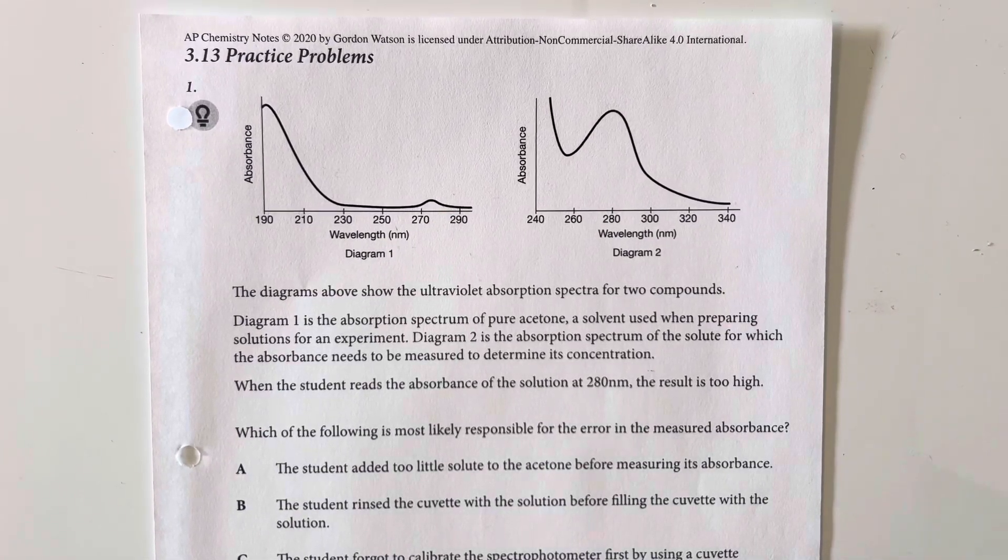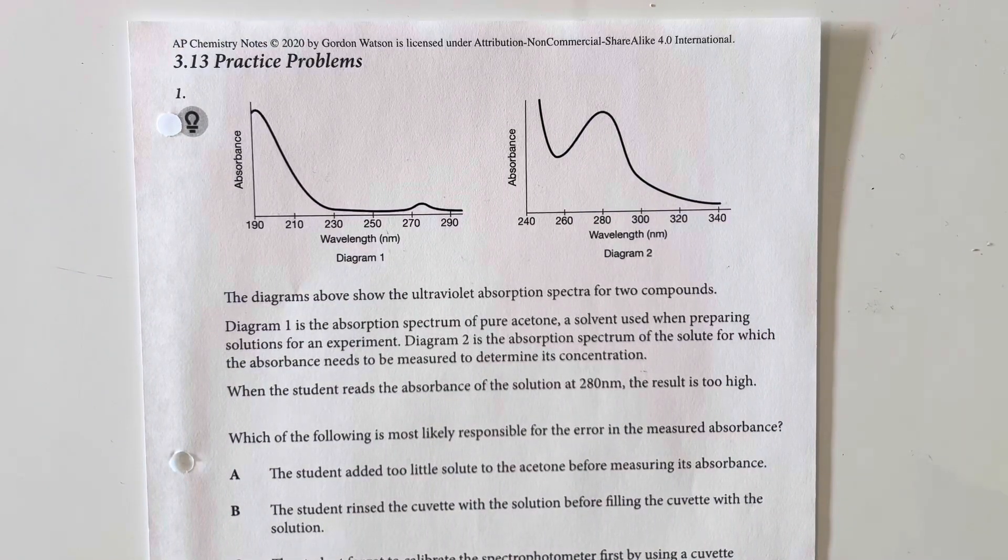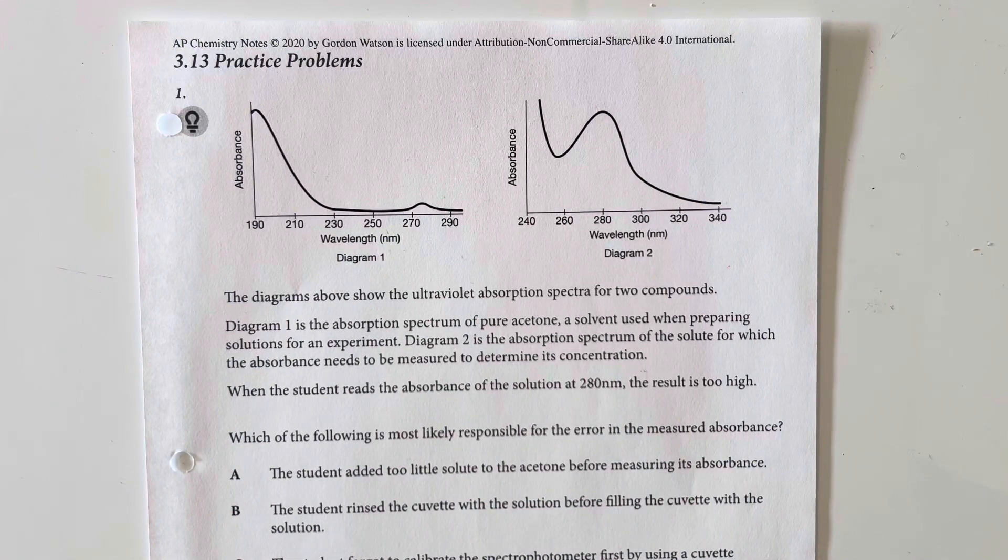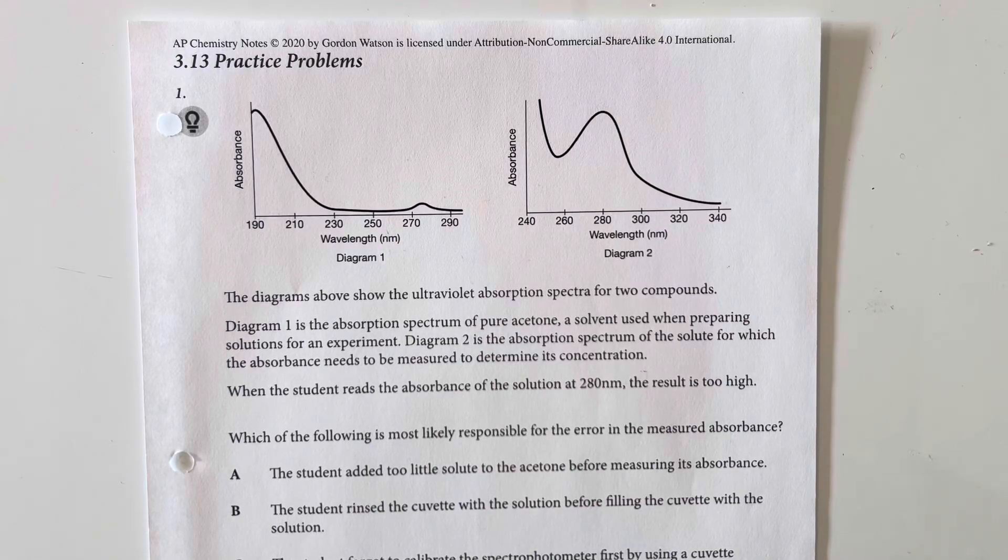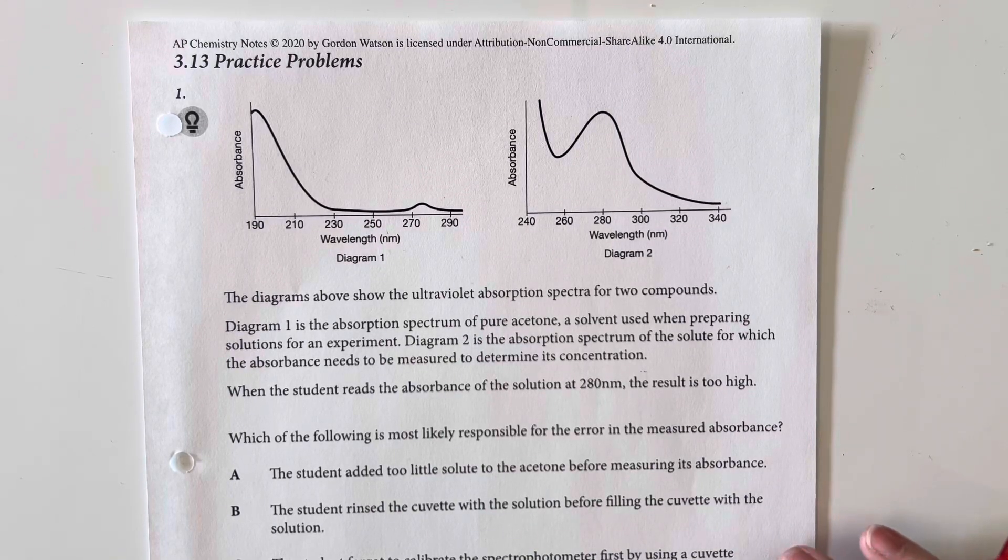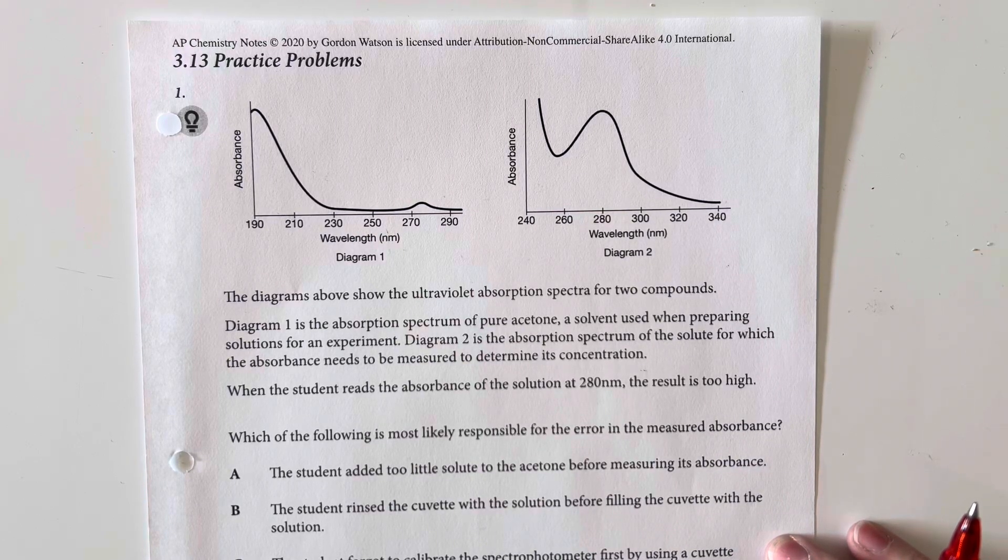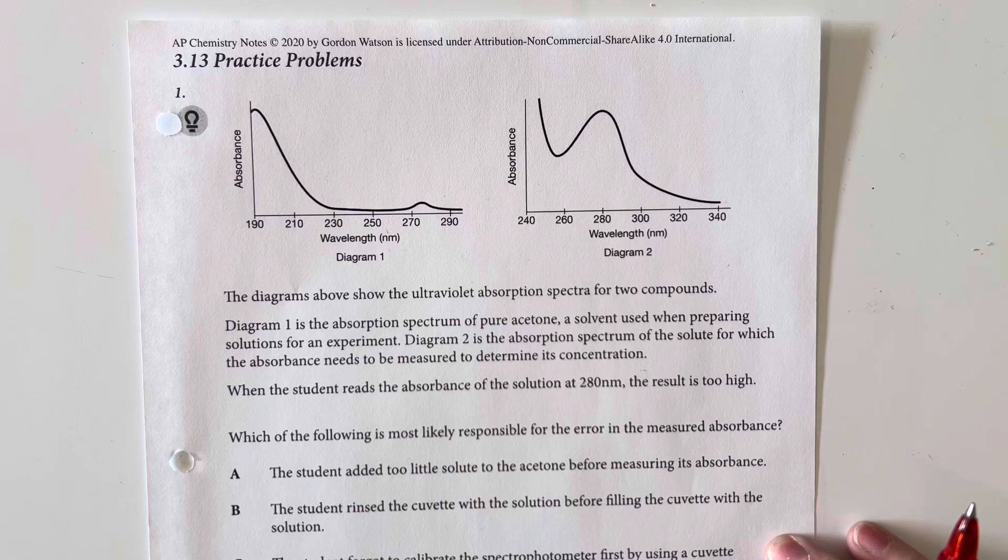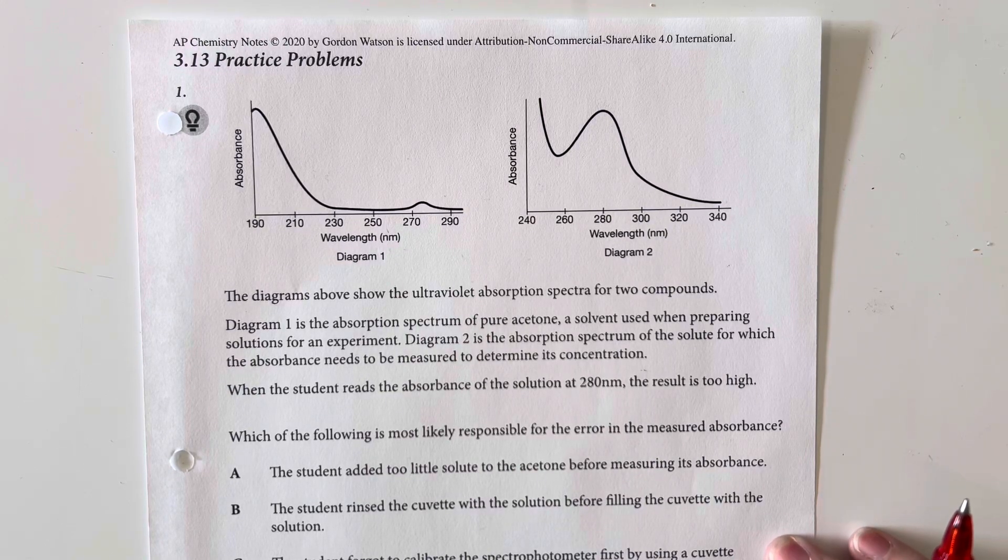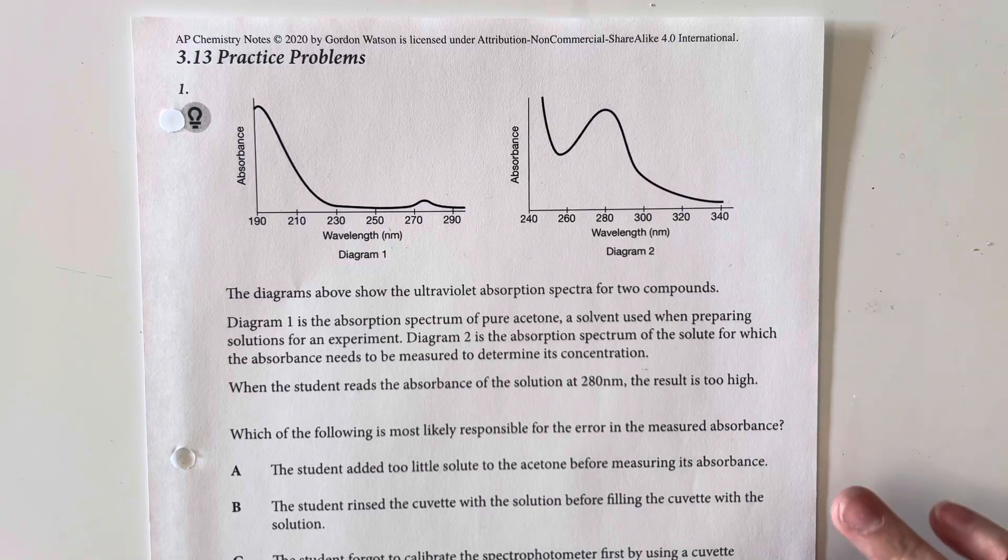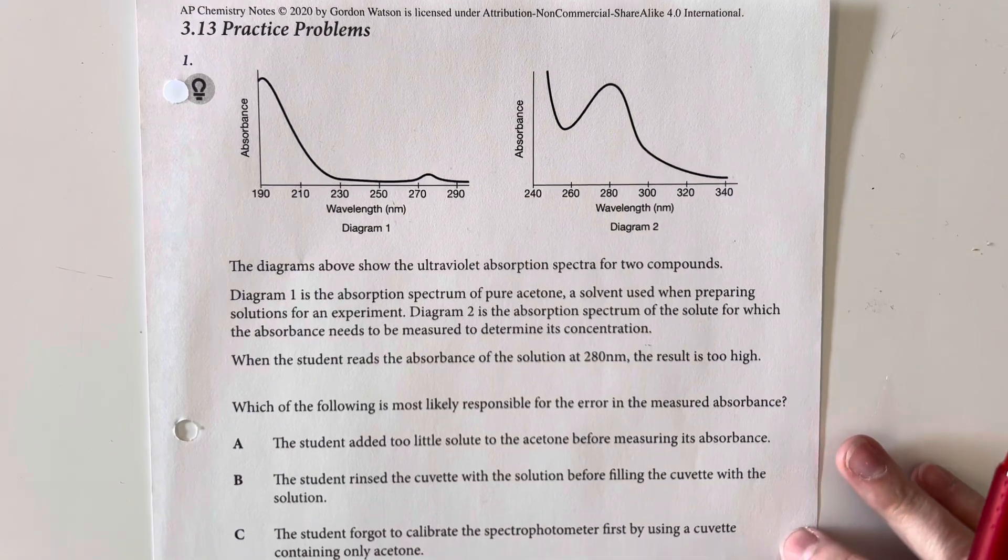3.13 practice problems. The diagrams above show an ultraviolet absorption spectra for two compounds. Diagram one is the absorption spectrum for pure acetone, a solvent used when preparing solutions. The absorbance needs to be measured to determine its concentration. When a student reads the absorption of the solution at 280 nanometers, the results are too high. Which of the following is most likely responsible for the error in the measured absorbance?